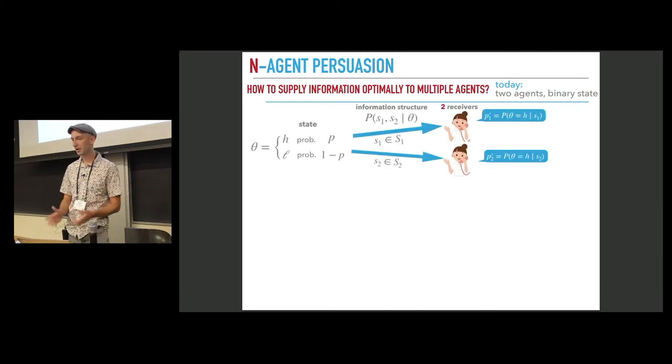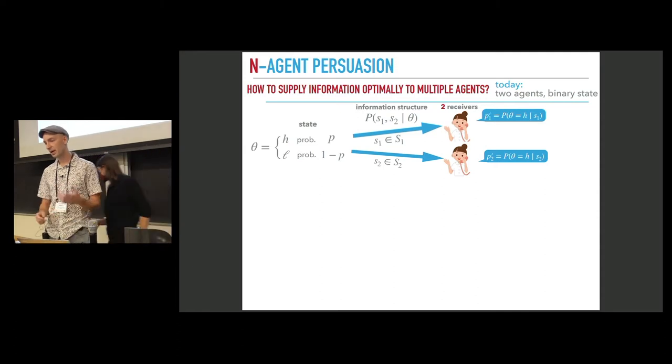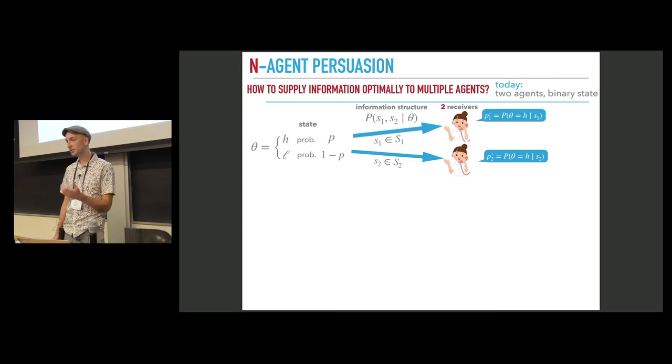The setting is as follows. We have a binary state theta, high or low, prior probability of a high state is P. We have two receivers. They do not observe the realization of the state.